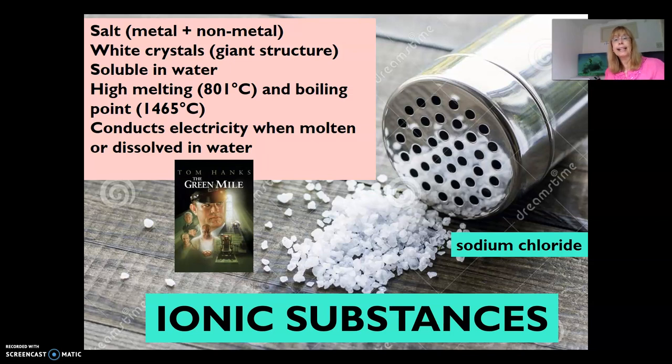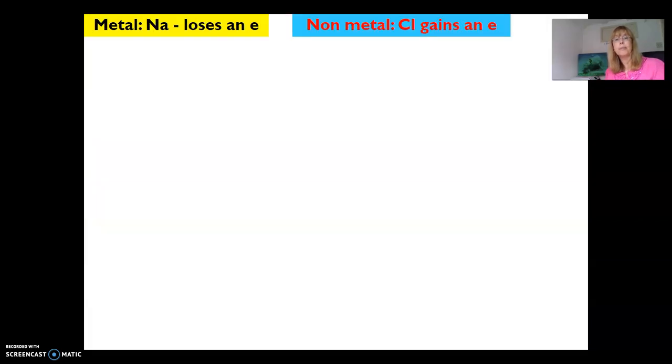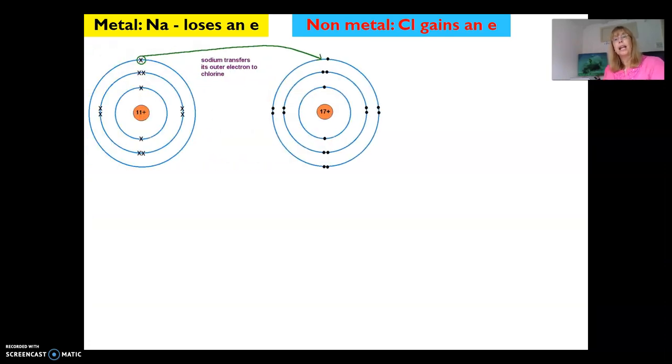Let's look in detail at how these substances bond. Sodium, being a group 1 metal, has one electron in its outer shell, so it wants to get rid of that electron so the shell below, which is full, is on the outside.